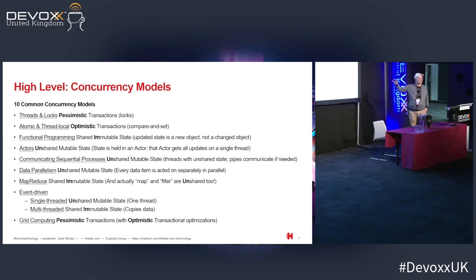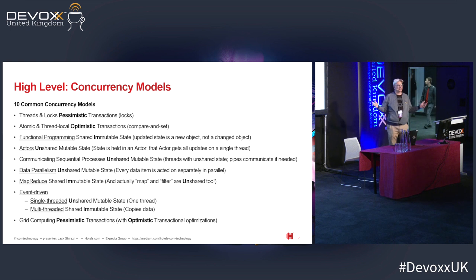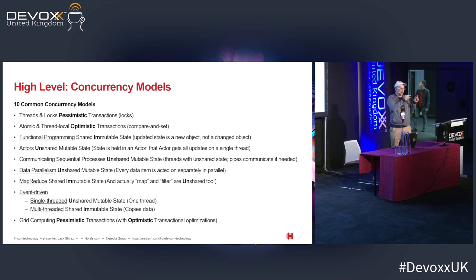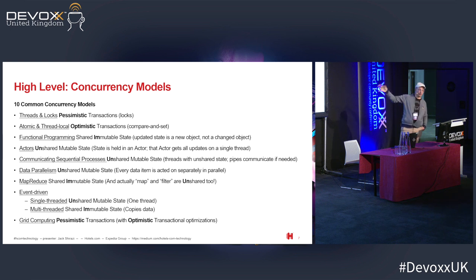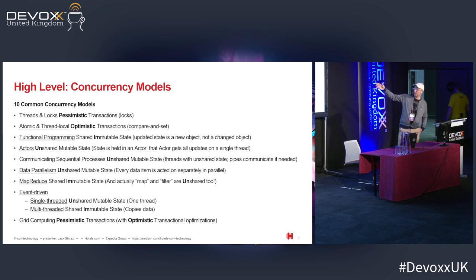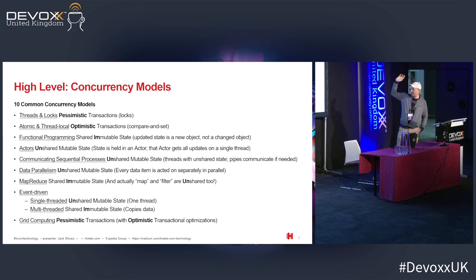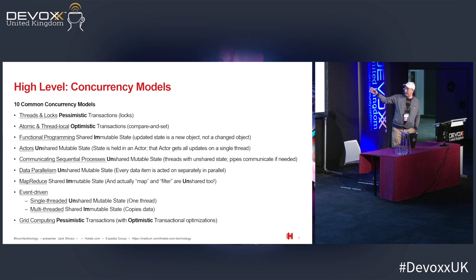Data parallelism: think about a huge two-by-two matrix where every single value is a different number, but the operation you do on every value is the same. That works brilliantly with GPUs. A lot of machine learning algorithms are based on matrix manipulation, so data parallelism works brilliantly with machine learning — that's why it's taken off in that area. Event-driven has been there since before Java, since the 80s. And MapReduce more recently.